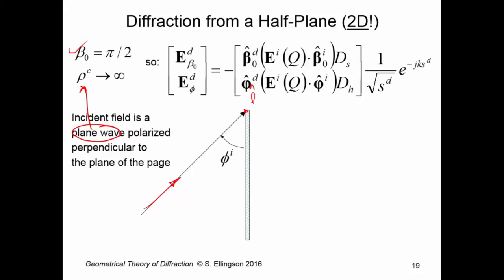And so we can write the expression for the diffracted field relatively simply. This part, of course, is all as described before. But the spread factor, we know right away, is just 1 over the square root of the distance to the field point. The reason we know that is because here is s super d, here's the field point. This is a two-dimensional problem, as drawn here. There's only one way that this can spread, and that's as 1 over the square root of s super d. And then, of course, the phase factor is simply e to the minus jk s super d. That never changes in these problems.